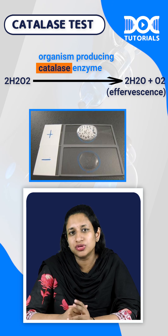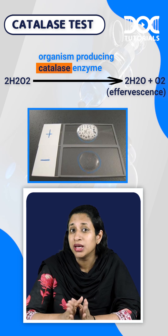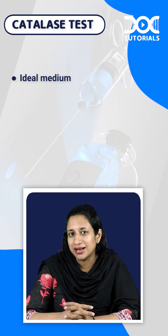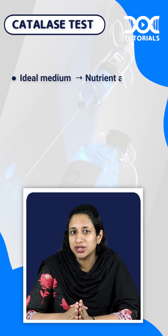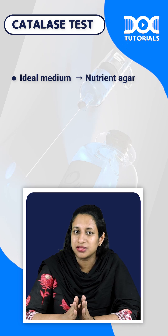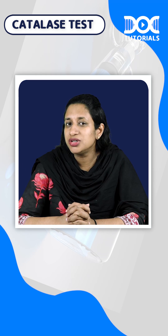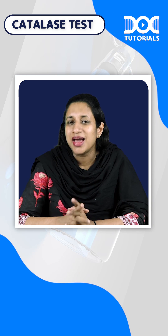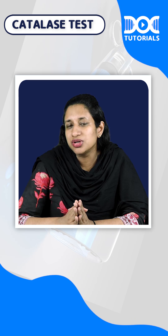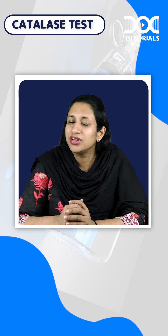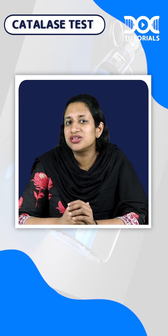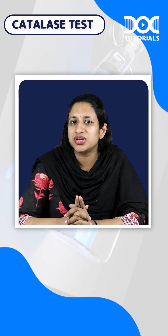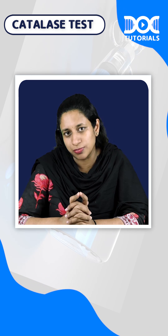There are two important things to keep in mind when doing the catalase test. The ideal medium to be used is nutrient agar, so you are always supposed to test the colony taken from nutrient agar. You do not use a colony picked up from blood agar because it can give a false positive result, and you cannot use your loop to pick up the colony when testing for catalase. Most importantly, the test is done to differentiate between staphylococci and streptococci.